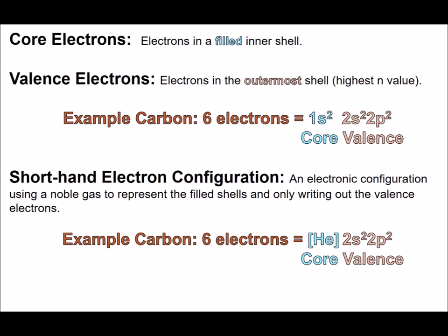The valence electrons largely determine an atom's chemical behavior, and the short-form electron configuration highlights the valence electrons. When writing a shorthand configuration, a substitution for the core electrons is used, which is the previous noble gas written in square brackets. For carbon, the shorthand configuration is helium in square brackets, 2s2, 2p2.